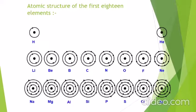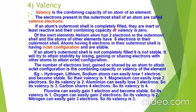Now talking about valency — valency is the combining capacity of an atom of an element. The electrons present in the outermost shell of an atom are called valence electrons. The combining capacity of an element to complete its octet in the outermost shell is the valency. To achieve this, an atom either loses electrons, gains electrons, or shares electrons.